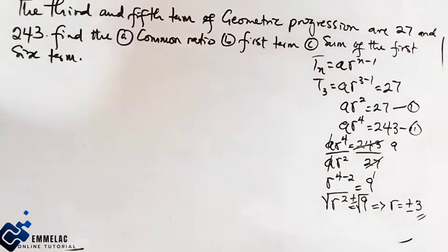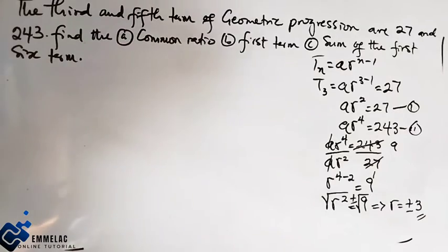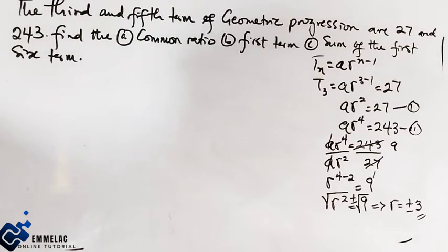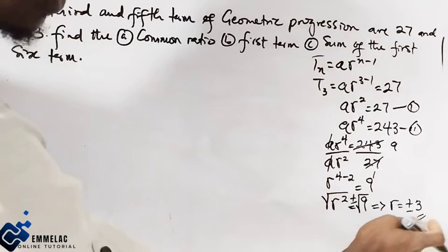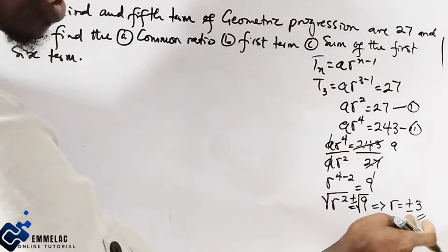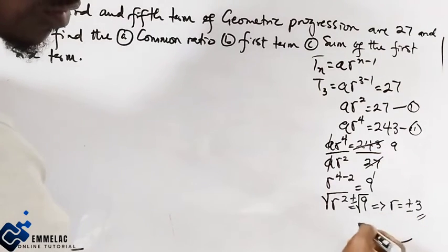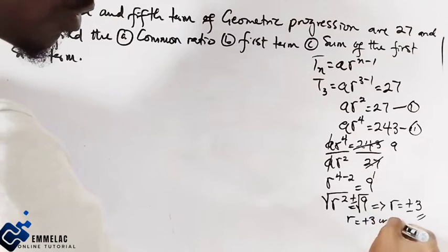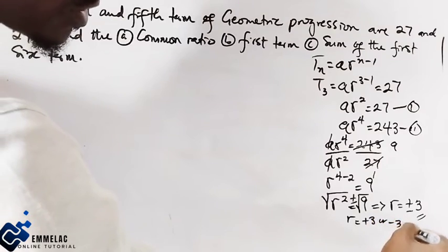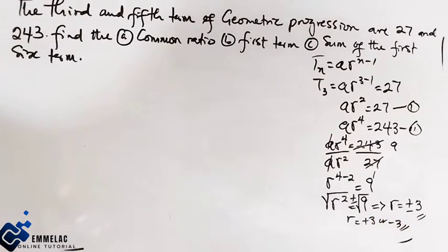So our common ratio R has two values: either R equals positive 3 or R equals negative 3.